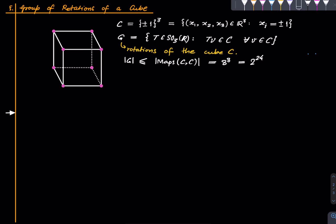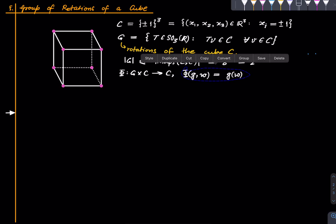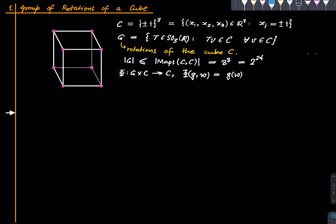There is a natural action of G on C. Define φ: G × C → C by φ(g, w) = g(w), where g is a linear map and w is a vector in C — this is just the image of the vector w under the linear map g. One can check that this defines a valid group action.